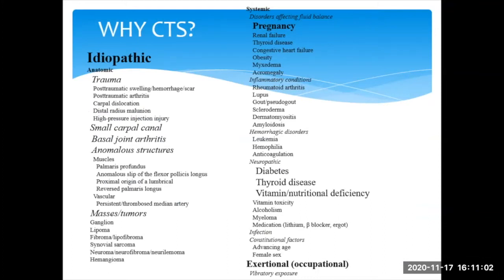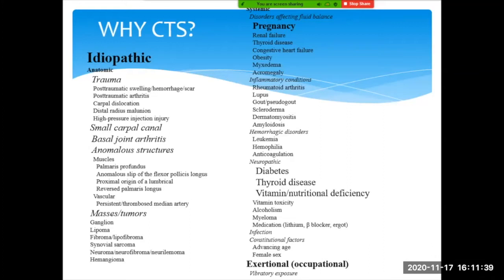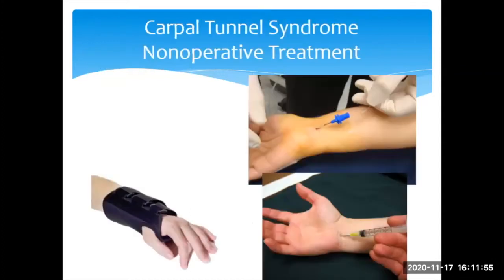People often ask why they got carpal tunnel. The most common reason is what I call bad luck, or idiopathic — it just happens as a result of life in general. There's a lengthy list of possible causes. Historically, a lot of occupational causes were attributed to it, including typing, but research found the worst occupational cause is running a jackhammer — the vibration irritates the hand. That translates to things like vibration from driving or holding bicycle handlebars, which many patients here find makes their symptoms worse.